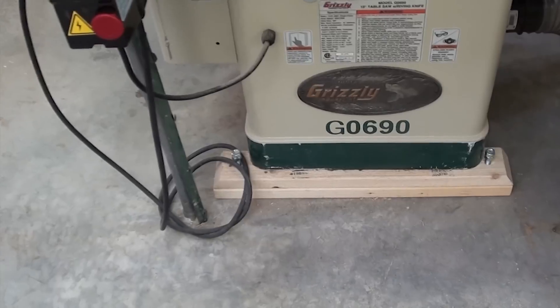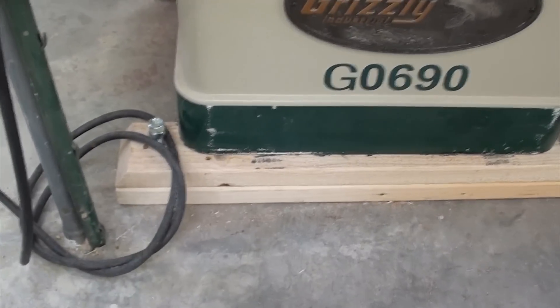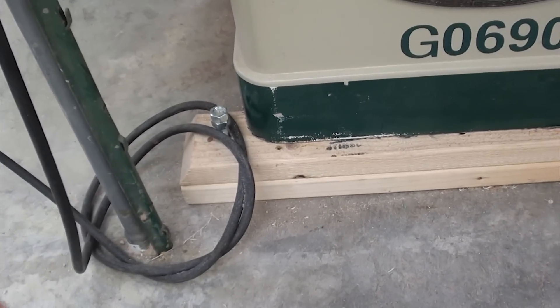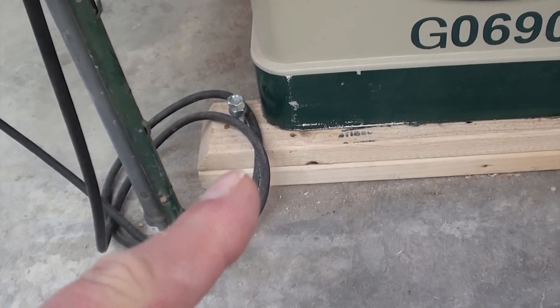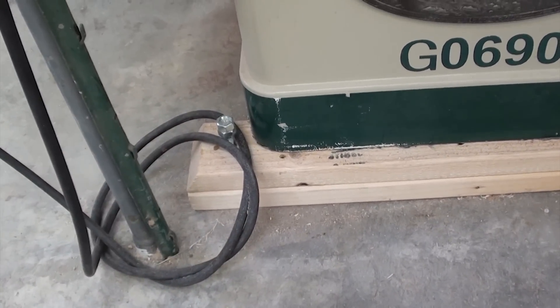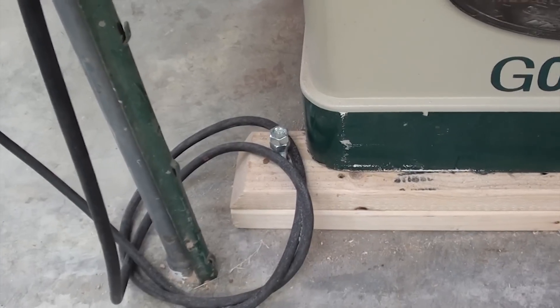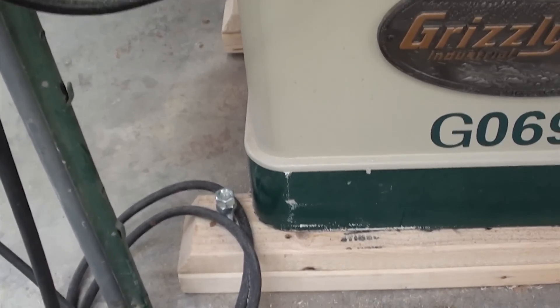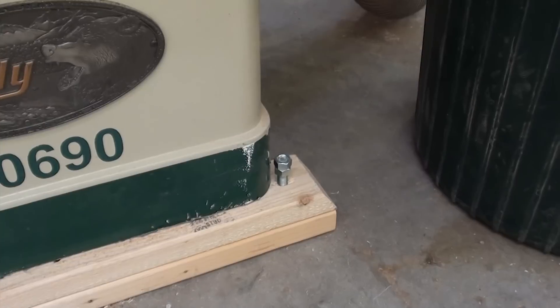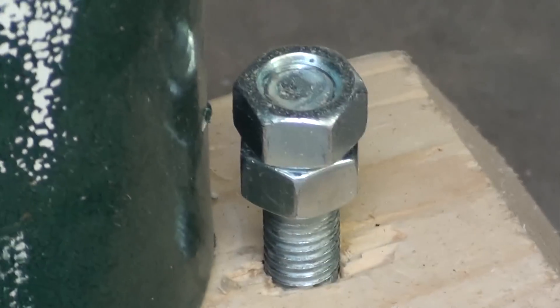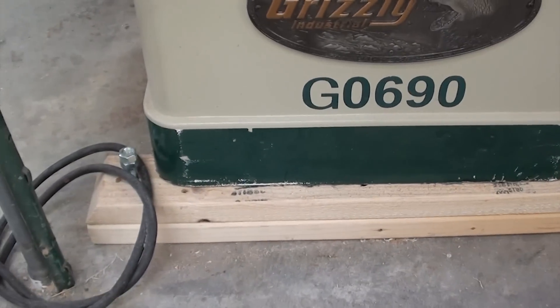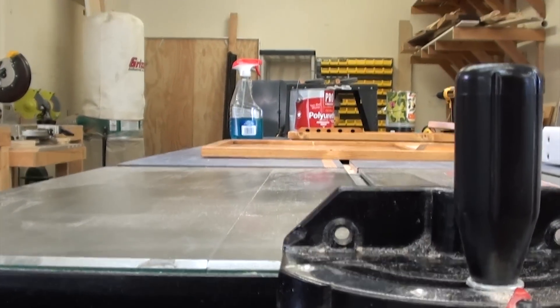So what I did was I built these risers and inside underneath these two-by-fours I epoxied in a big square nut and then ran these carriage bolts through it, put these jam nuts up at the top so that I could raise and lower the wood.